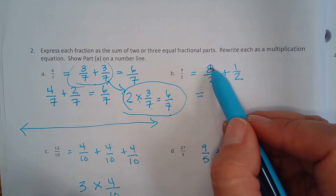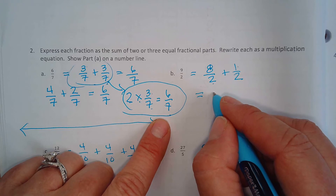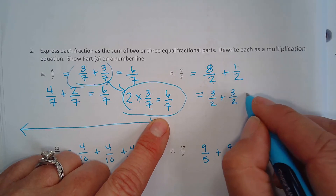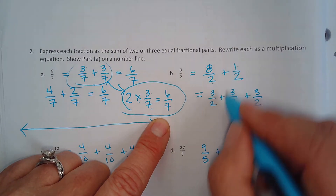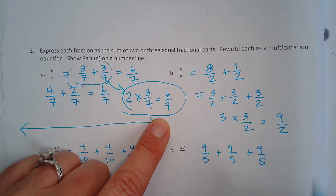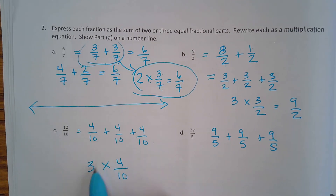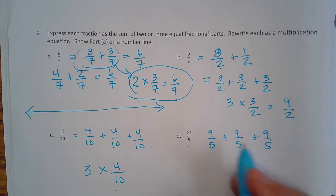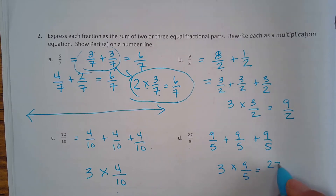For nine halves: you could break it up into three-halves plus three-halves plus three-halves, and do three times three-halves, which equals nine-halves. Or four-tenths plus four-tenths plus four-tenths would be three times four-tenths. Twenty-seven fifths could be nine-fifths plus nine-fifths plus nine-fifths, so three times nine-fifths equals twenty-seven fifths.